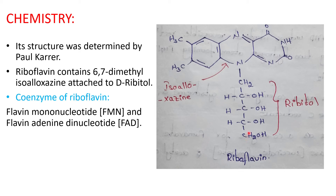FMN can be transferred into FAD. FAD is formed from FMN by the transfer of AMP, adenine monophosphate. AMP itself is formed from ATP. This completes the chemistry and structure of riboflavin, including the coenzymes involved.